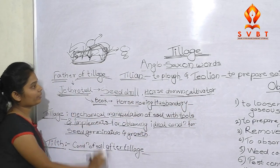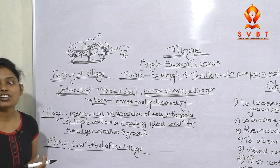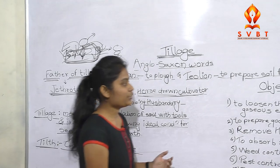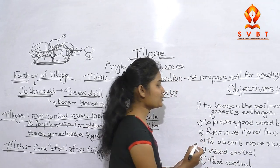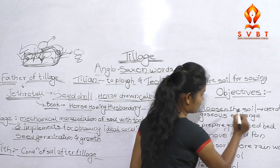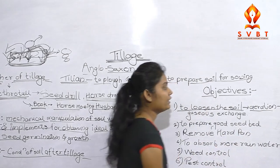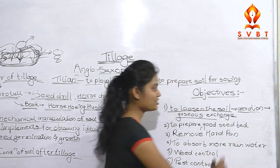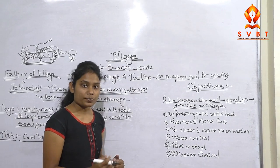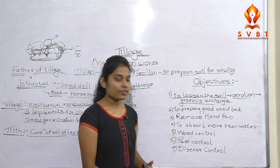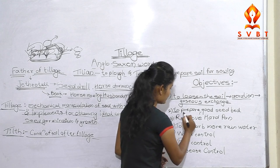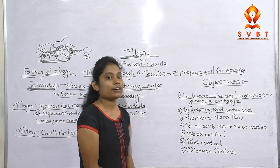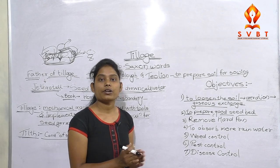We have to ask questions about this. What are the purpose and objectives of tillage? The soil has to be loose. For the loose soil there is aeration, there is a gaseous exchange, and gaseous exchange is necessary for the crop growth. To prepare a good seedbed — good seedbed is the most important objective, so the soil is prepared to be a seedbed.